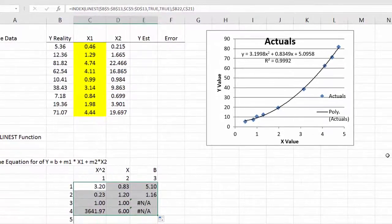So let's compare the results. Here this shows 3.2 for my x squared term, 0.83 and 0.51 for the constant.